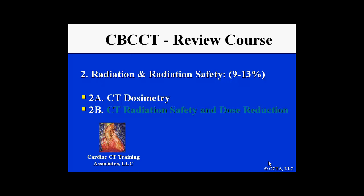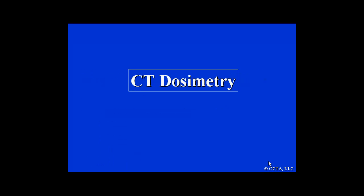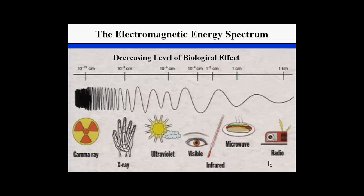This module is Module 2, Radiation and Radiation Safety, Module 2A, CT Dosimetry. This is an overview of the electromagnetic energy spectrum all the way from radio waves down to gamma rays. You can see that X-rays fall into a very high area of energy.